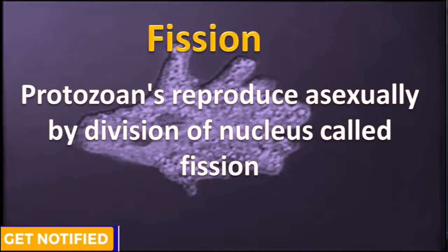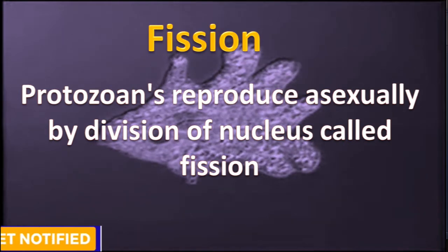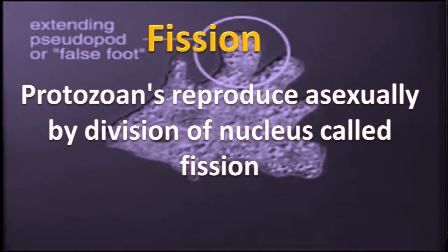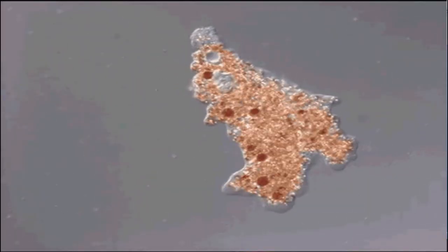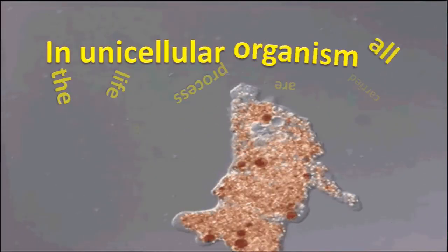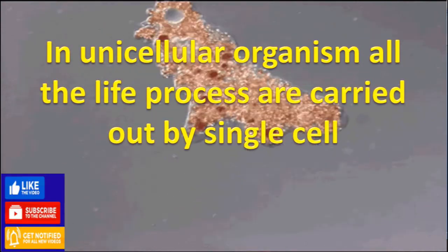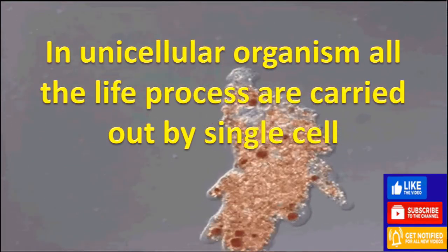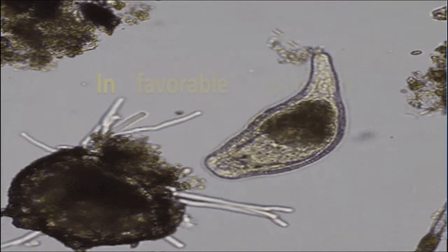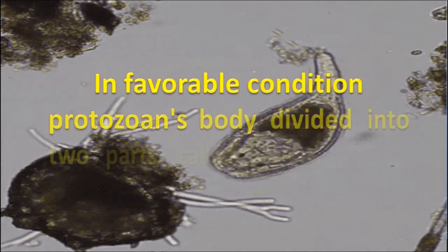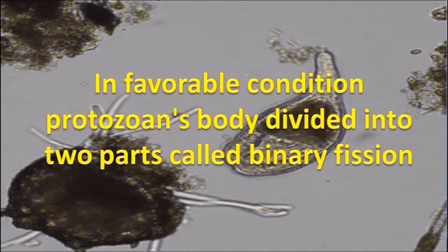Fission: Protozoans reproduce asexually by division of the nucleus, called fission. In unicellular organisms, all the life processes are carried out by a single cell. In favorable conditions, the protozoan's body divides into two parts, called binary fission.